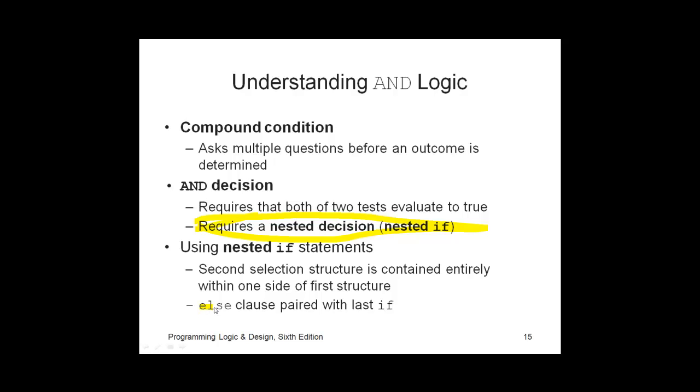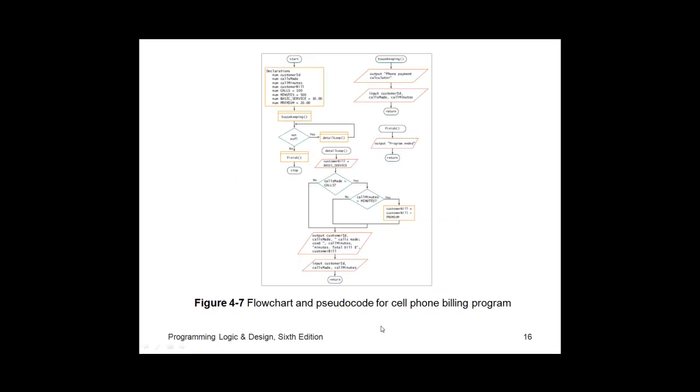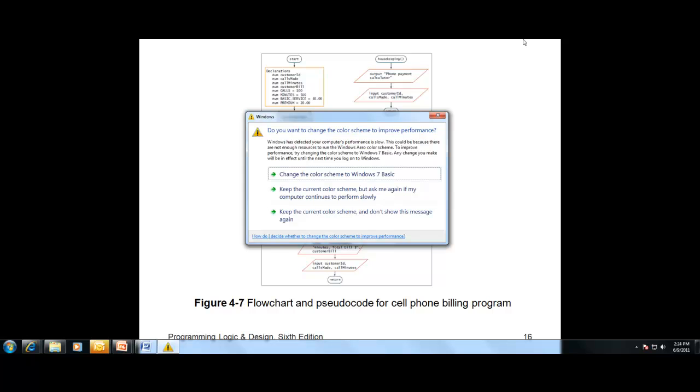Remember that when you're dealing with nested if statements, the else clause is always paired with the last or the most recent if. So if you have a nested if statement, you're going to have if, else, end if inside of an if, else, end if. So you have to start the second one, finish the second one, before you finish the first one. You might want to refer to the figure 4-7 in your textbook because it's a little bit difficult to see here.